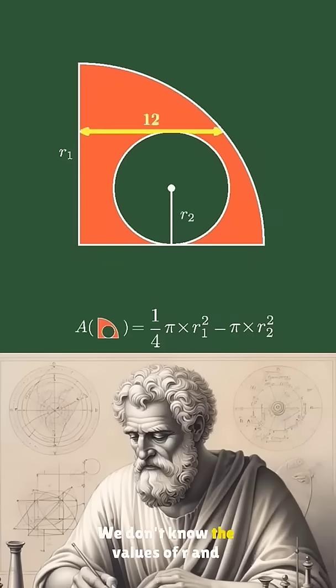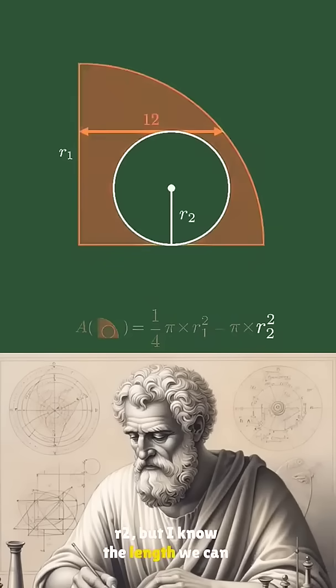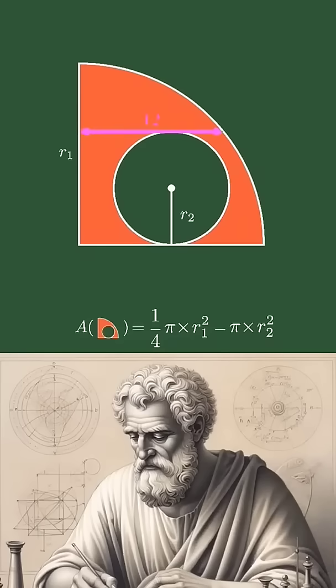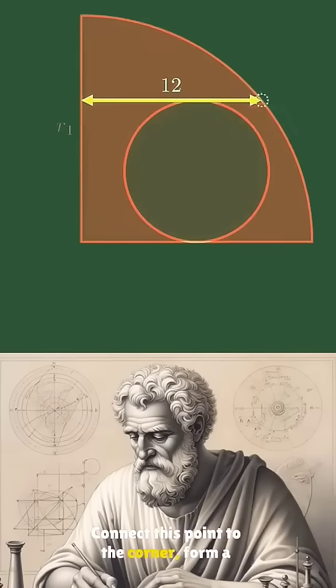We don't know the values of r1 and r2, but we know the length. Connect this point to the corner to form a right triangle and take advantage of it.